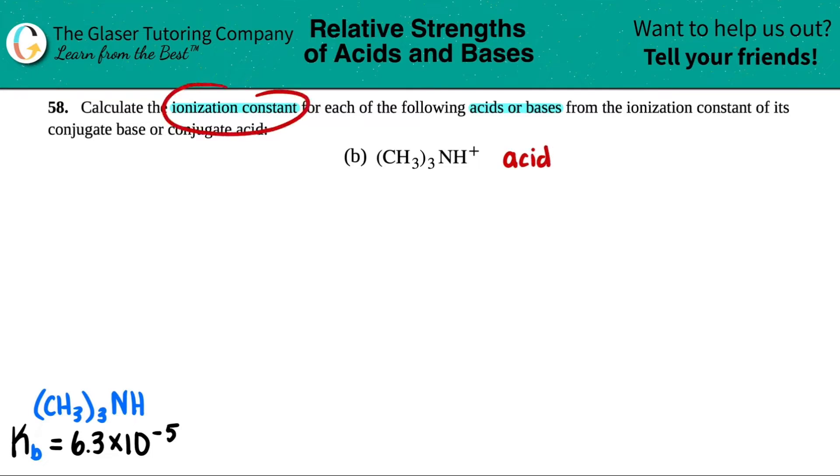So in essence, the ionization constant that we're trying to find is Ka, A for acidic.